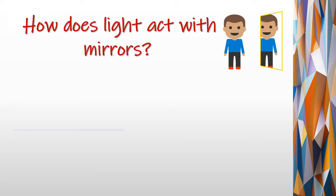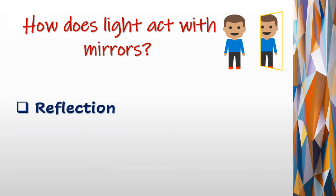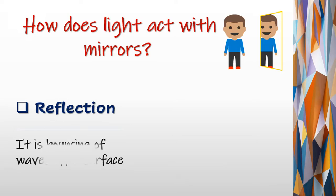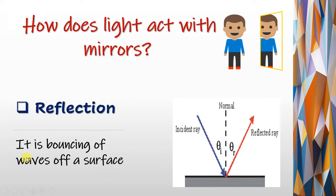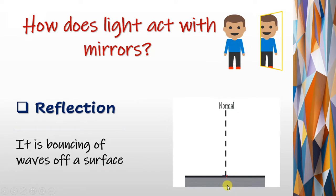All of you, at the beginning of the day, or before we go shopping, or before we go any place, we look at ourselves through the mirror. What happens when we look through the mirror? Something called reflection of light happens. Reflection is the bouncing of waves off a surface. It's like playing basketball — you bounce the ball and the ball returns back.